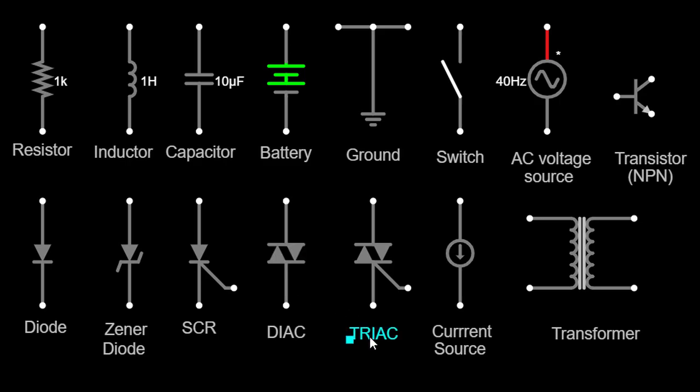The TRIAC symbol combines elements of a transistor and a diode. It is a three-terminal device that can conduct current in both directions when triggered. TRIACs are widely used in AC power control applications, such as dimmer switches and motor speed control.